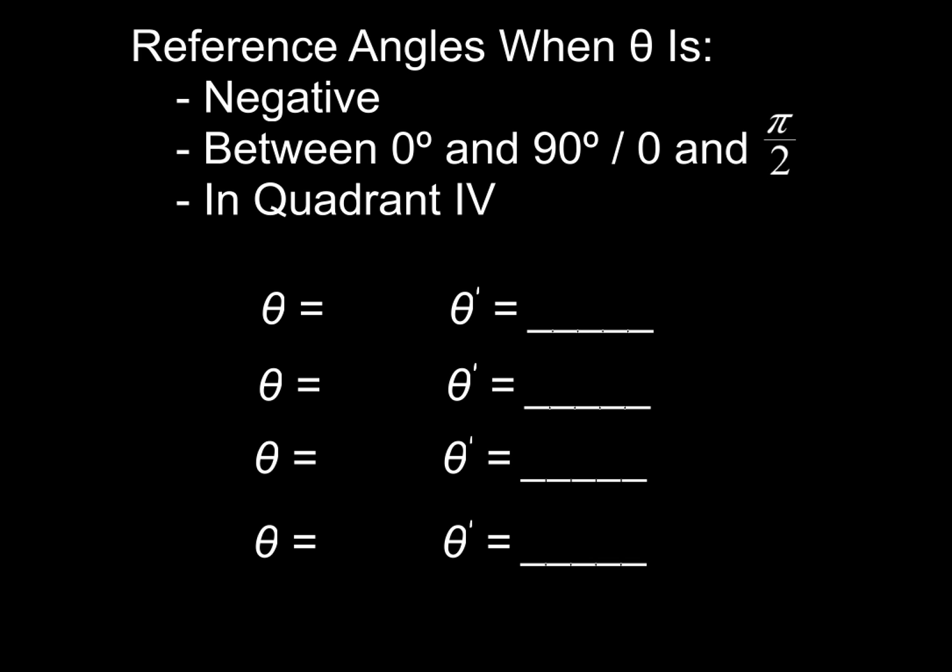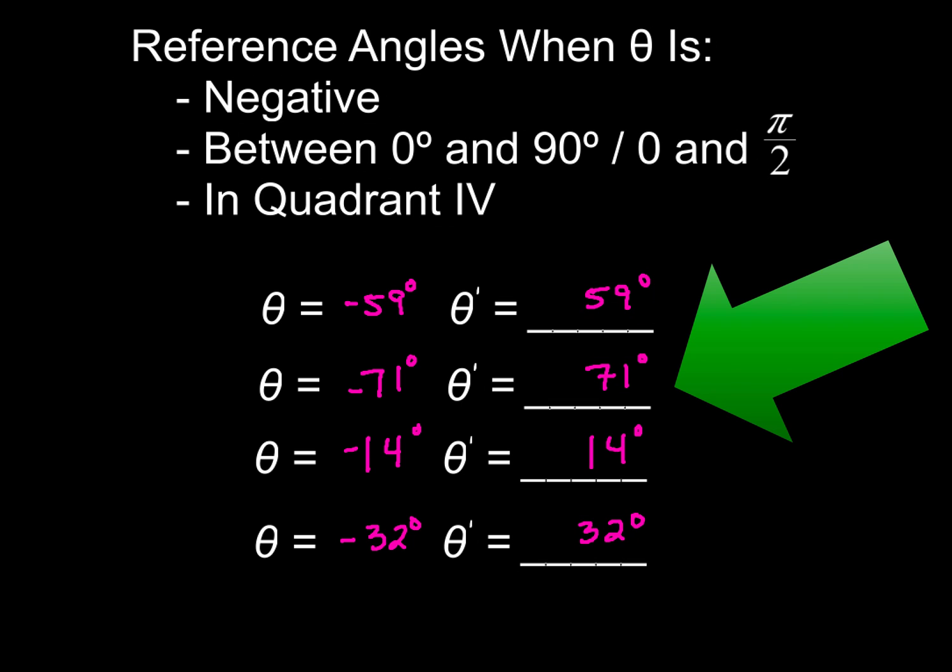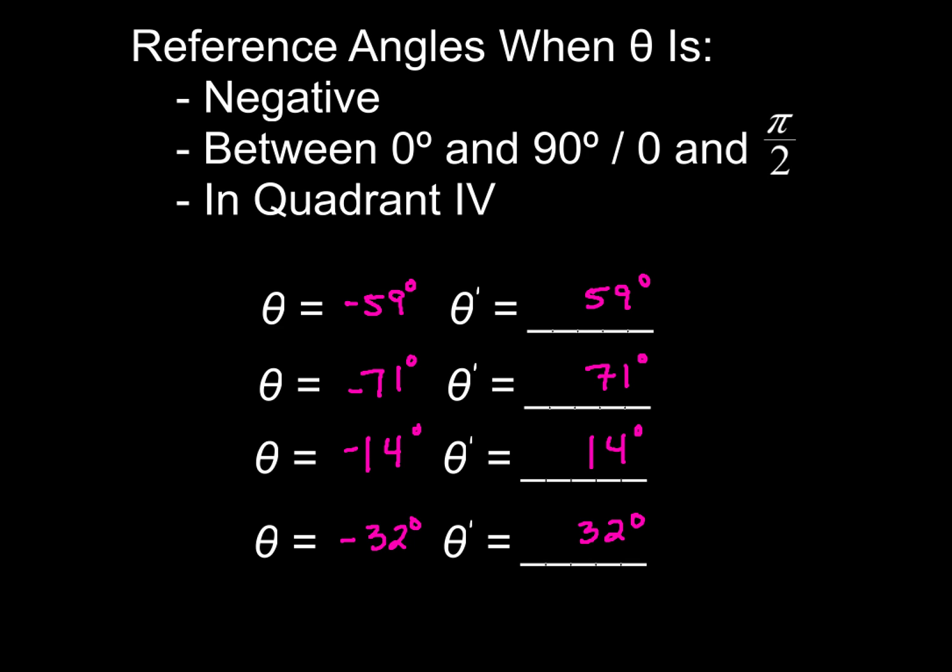And that special case is this. If you have reference angles when θ is negative, between 0 degrees and 90, or 0 and π/2 for radians, and that angle is in quadrant 4, there's going to be a certain pattern. And I think you guys will pick up what that pattern is really quickly here. Check this out. Look at the values of θ, and look at the values of our reference angle. What do you notice? Of course you do. If your given angle is negative and in quadrant 4, and that angle is between 0 and 90, then that reference angle is just going to be the absolute value of the given angle, θ.